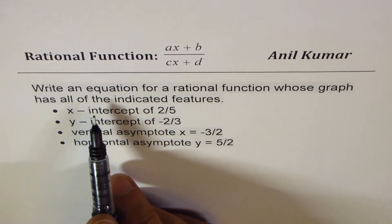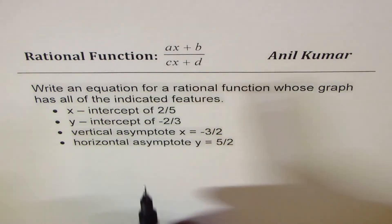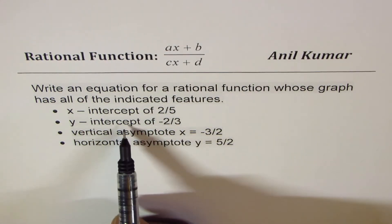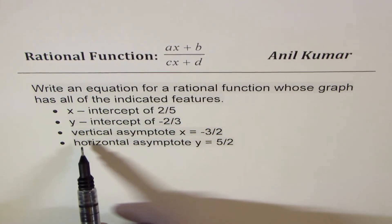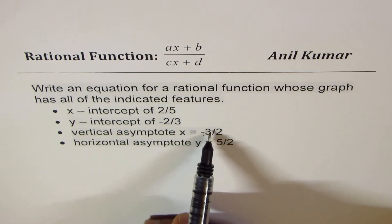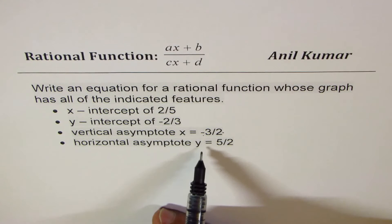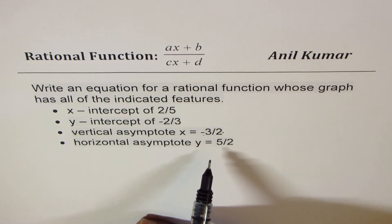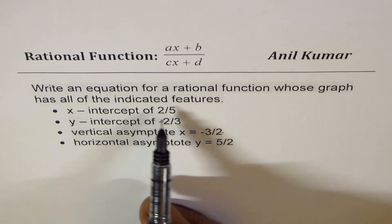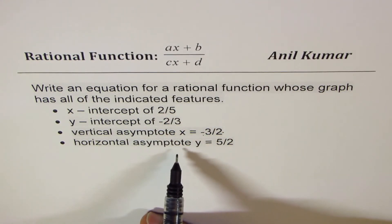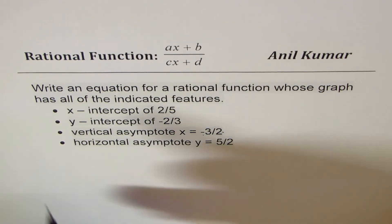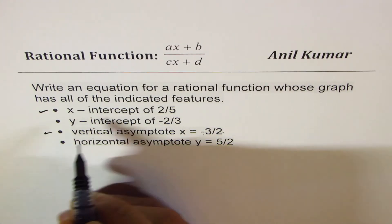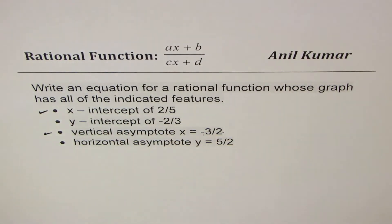Now here, we have to again write the rational function in that form where x-intercept is 2 over 5, y-intercept is minus 2 over 3, vertical asymptote is at minus 3 over 2, horizontal at 5 over 2. So you can actually pause the video, write down the solution of this, and then check with my solution. So what are we going to check? We are only going to check numerator with x-intercept and vertical asymptote.